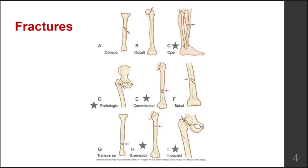You probably could describe what a fracture is, but what many people aren't aware of is that there are many different types of fractures that exist. A fracture is really just a break in the continuity of bone. A break will occur when force is applied to the bone that exceeds the tensile strength or the compressive strength of the bone. In this image you can see a variety of different types of bone fractures, and the ones that are starred are the ones that you need to be aware of for this course.